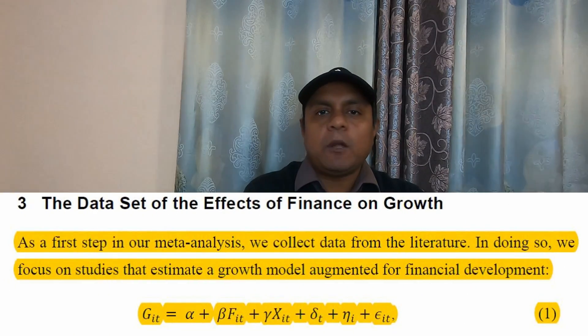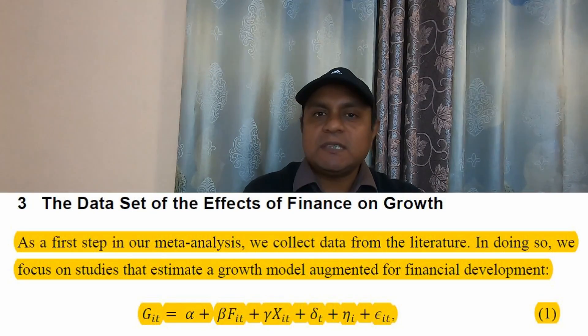The next step is defining the model. For instance, we are talking about financial development and economic growth, which is a common linear model. You can see in the video that the linear model looks like this. You are going to collect papers that actually align with your model — essentially estimating the linear relationship between economic growth and financial development. That would be your common or generic model for this study.